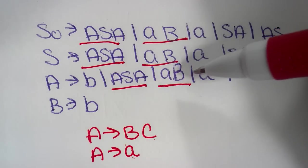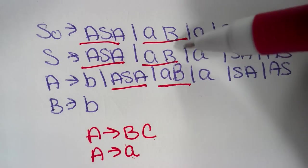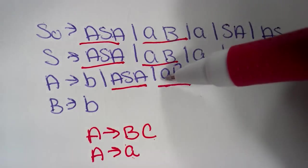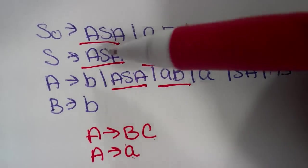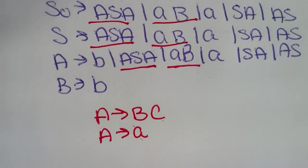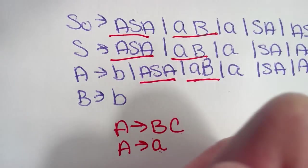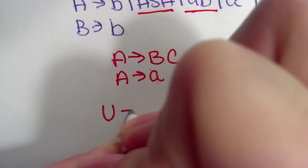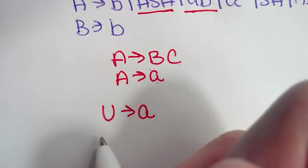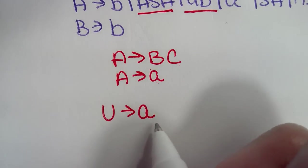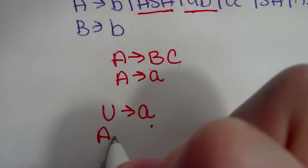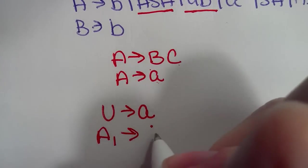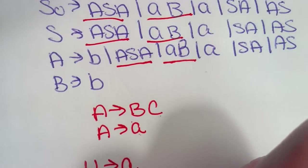So in order to make this Chomsky normal form, we have to create new variables to then replace the terminals or the variables. So for example, what we're going to do is we're going to add a U points to A. So we have a new variable U that's going to point to our terminal A. And we create a new variable A1 that's going to point to our variables AS.